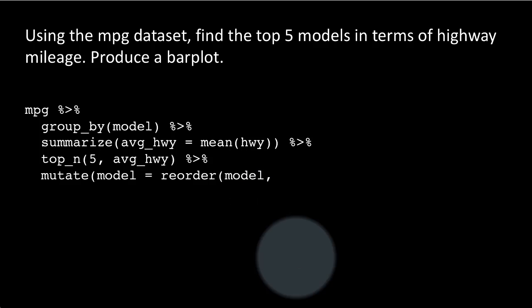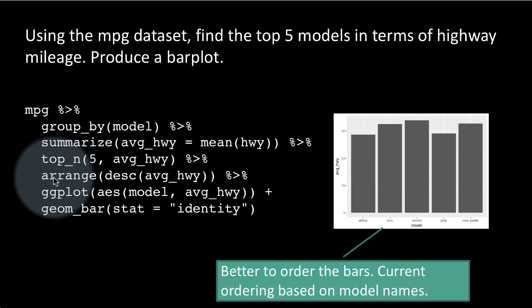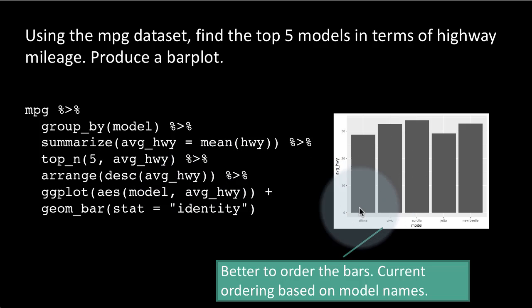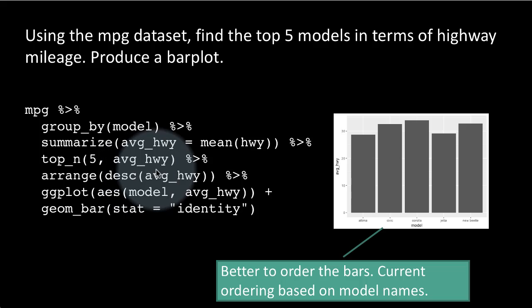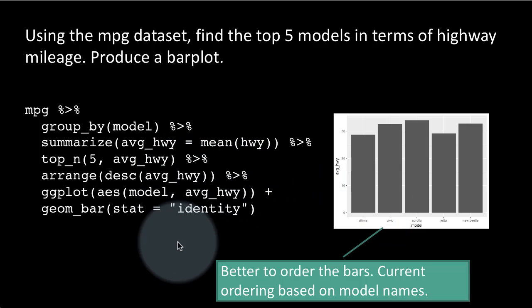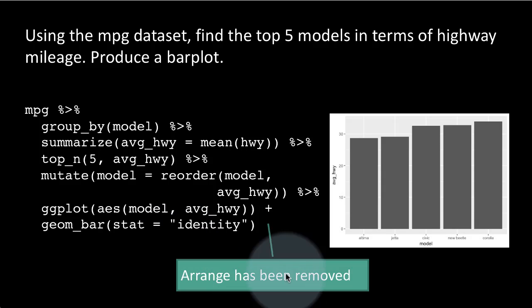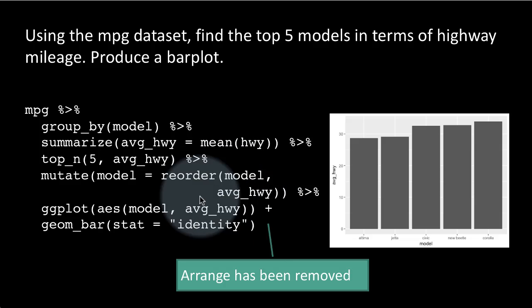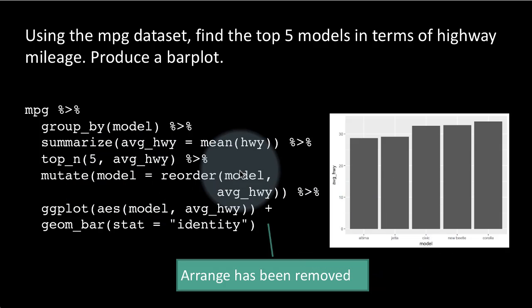Going back to the previous slide — we did have an arrange by descending order of average highway mileage, but that didn't have any impact on the bars because ggplot orders the bars based on the names of the x-axis values or the factor levels of the variable on the x-axis. The arrange is not going to play any role at all. So in the second plot we actually removed arrange because it plays no role. When piping results into ggplot, if you want bars in proper order, arrange won't cut it — you have to mutate and create a factor with the correct factor levels.